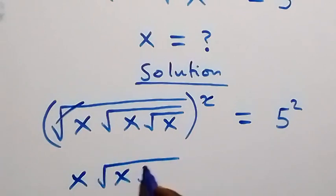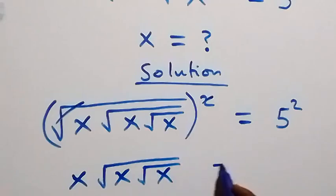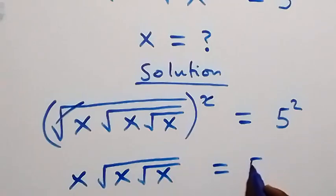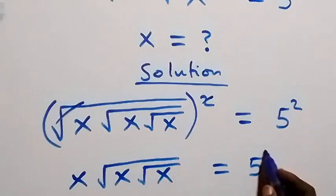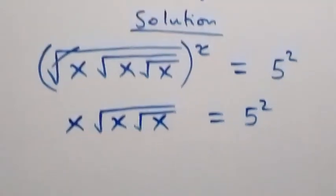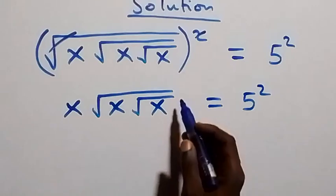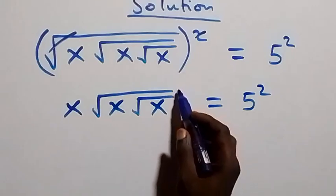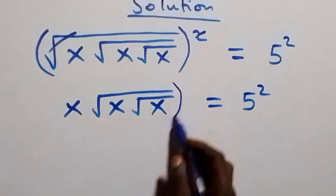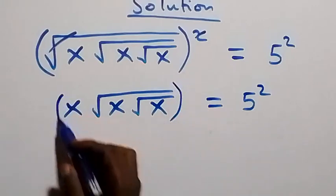Then square root of x inside, now equals to — let's leave this as 5 squared. The next step: let's square both sides again, then we square this side.